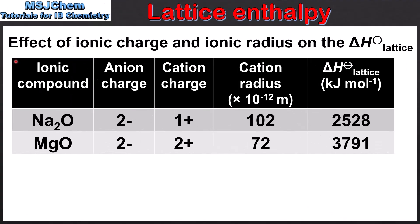Next we look at the effect of ionic charge and ionic radius on the lattice enthalpy. In this table we have data for two ionic compounds: sodium oxide and magnesium oxide. Both compounds contain the oxide ion which has a charge of 2-. The sodium ion has a 1+ charge and the magnesium ion a 2+ charge. The magnesium ion also has a smaller radius than the sodium ion. Comparing the lattice enthalpy values, magnesium oxide has a higher value than sodium oxide. So here we have two factors affecting the lattice enthalpy: the charge on the ion and the ionic radius. The magnesium ion has a higher charge and a smaller radius, resulting in magnesium oxide having a higher lattice enthalpy value than sodium oxide.